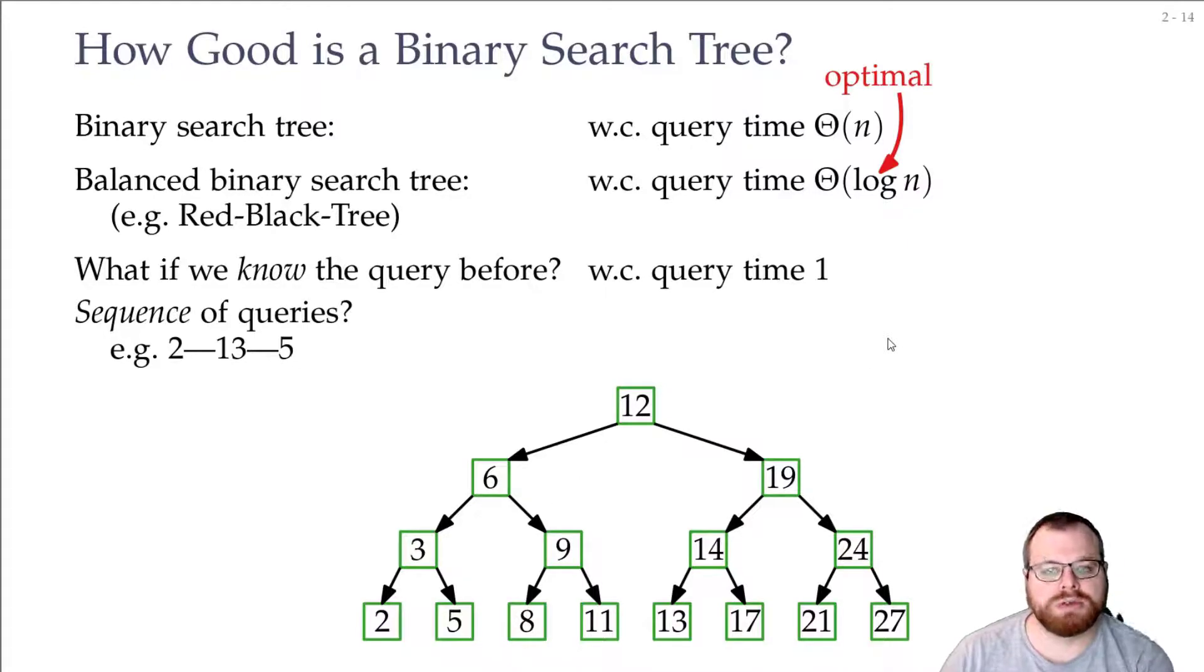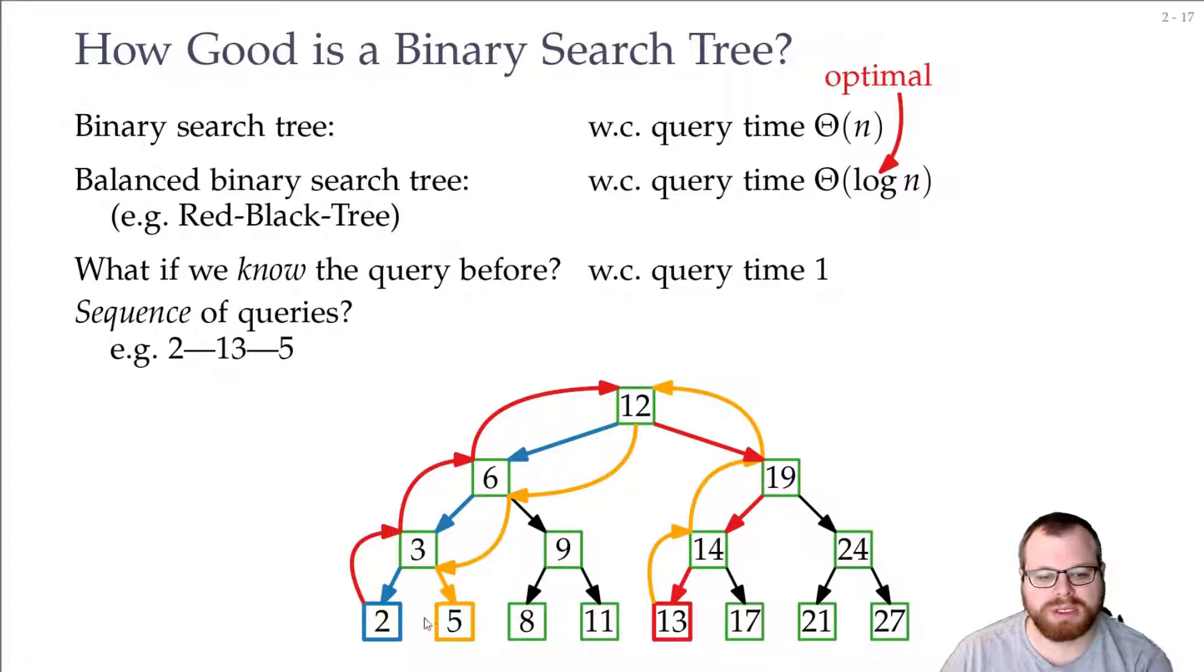And then what you can do is you can do several queries or you can keep walking. So you can start with the 12, you walk to the 2, now your pointer is here, and you walk to the 13. So you go up and down again. And now your pointer is here, you want to go up and down again.